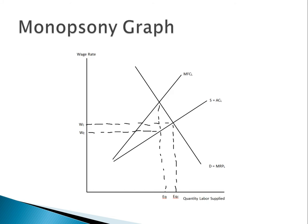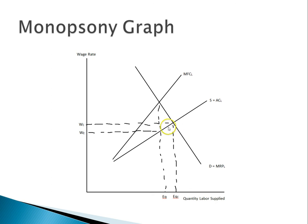In the monopsony graph, the demand curve is the same as in a perfectly competitive labor market — the marginal revenue product. However, the supply curve is now upsloping, and the marginal factor cost is above the supply curve. The monopsony will hire where MRP equals MFC. However, it only has to pay its workers the wage on the supply curve at that quantity. Compared to a perfectly competitive market, the monopsony pays less and hires fewer workers.